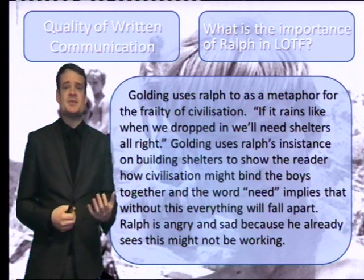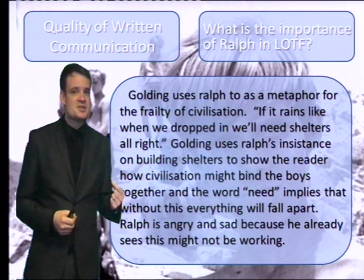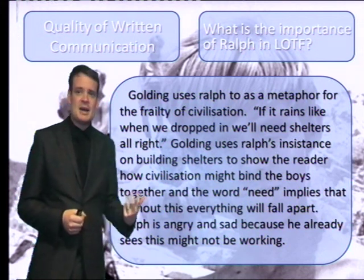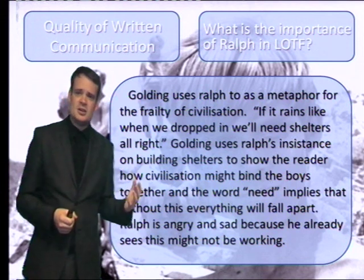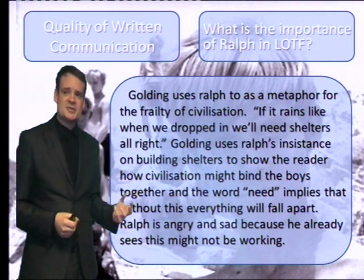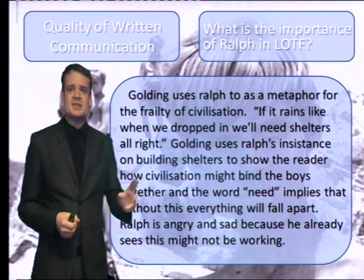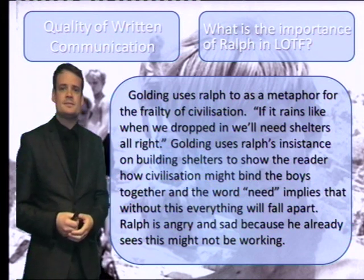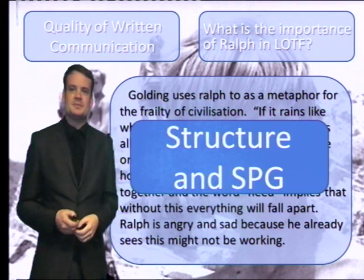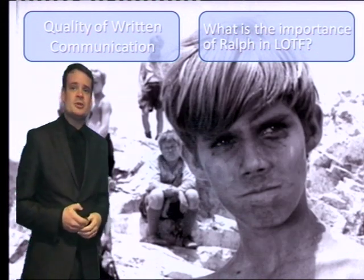The gist of that answer is very strong. It's focusing on the language of the quotation, it's focusing on the symbolism of the text and we have a sense of the relationship between writer and reader. So it's a good answer, but it seems chaotic. There are mistakes in there, simple errors that we have to rectify. Take a couple of seconds now and see if you can spot what those errors are. The deliberate errors I've planted are in structure and SPG. Let's see what it looks like if we improve it.